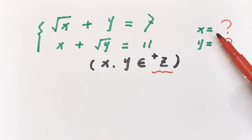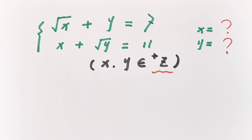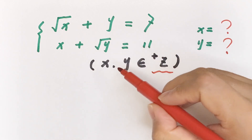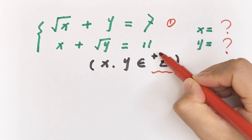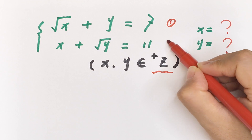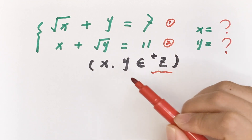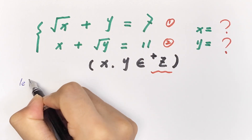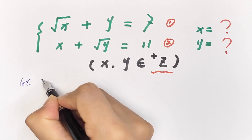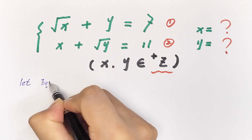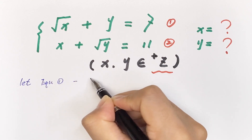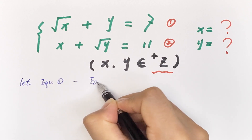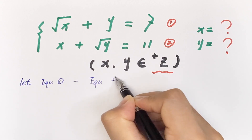First, we label the first expression as equation 1 and the second as equation 2. Then we compute equation 1 minus equation 2.